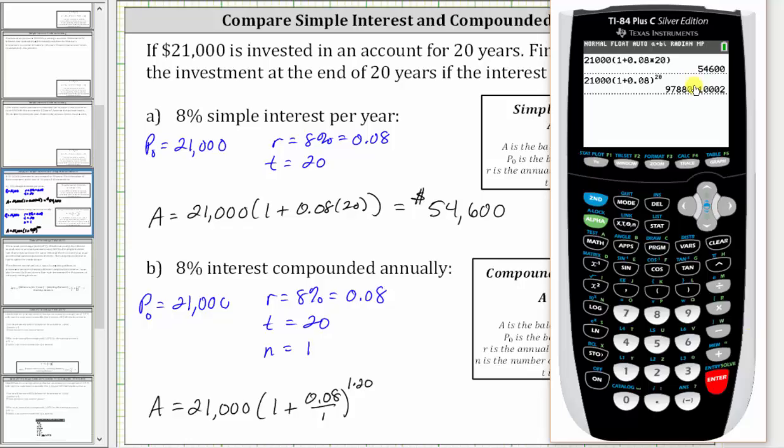We're told to round to the nearest cent. Because we have a zero in the third decimal place, the value is approximately $97,880.10.